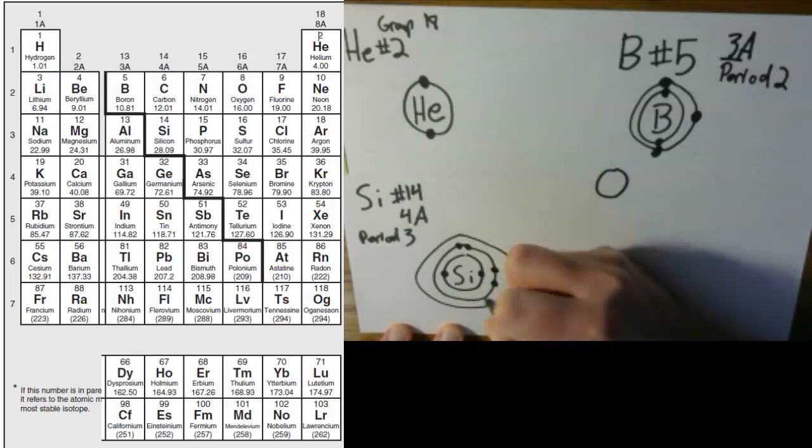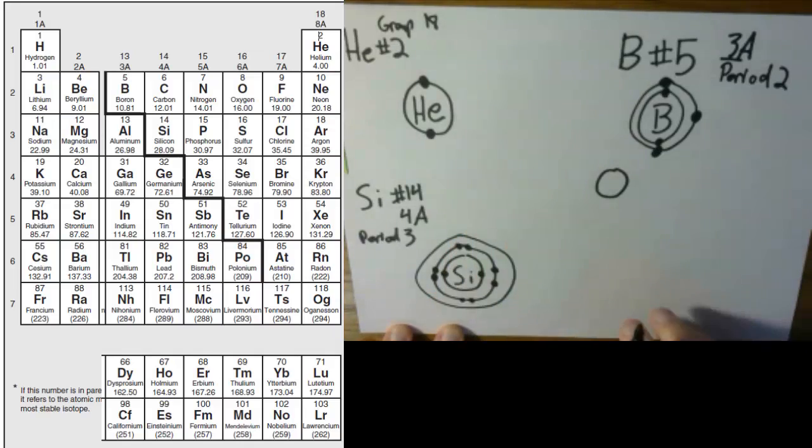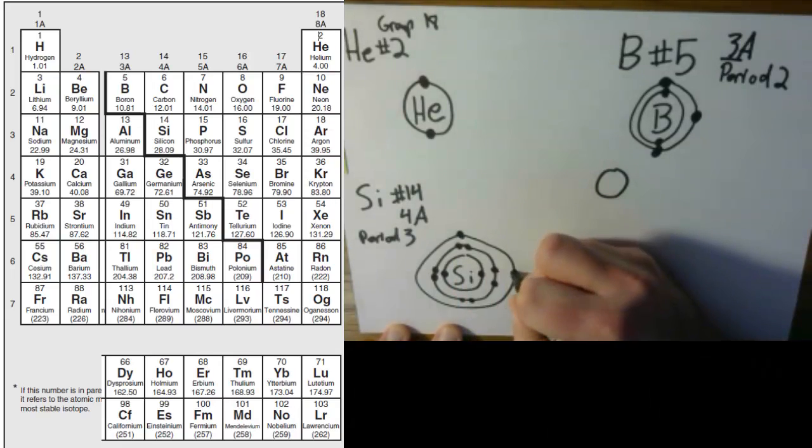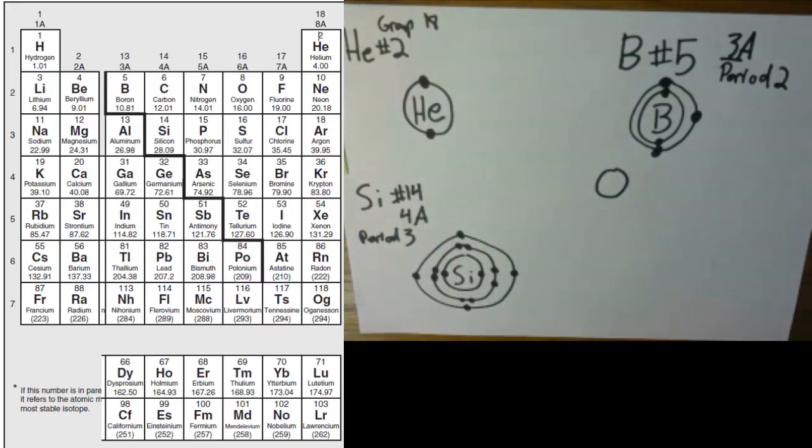And I'm drawing these in pairs because later on for a different topic, we're going to draw them in pairs like this. And then in the third ring, it's in group four, so it has four dots on the outside. One, two, three, four. And now to check to see if we're done, you count up all the dots and make sure it matches its number. So that should be 14 because it's element number 14. We have one, two, three, four, five, six, seven, eight, nine, 10, 11, 12, 13, 14 matches. We're good.